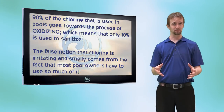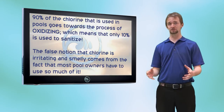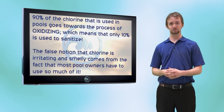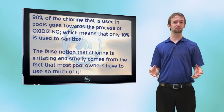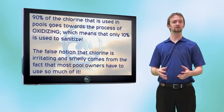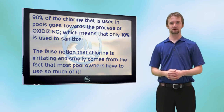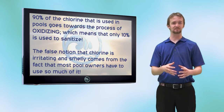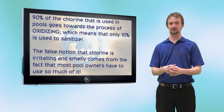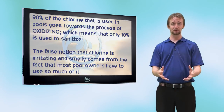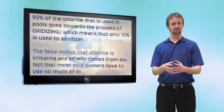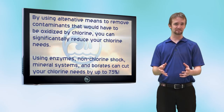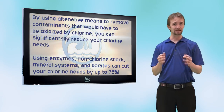Studies have shown that up to 90% of chlorine is used to oxidize, which is why a lot of people have to use so much chlorine in their pools, and why a lot of people with chlorine pools don't enjoy them — because there are alternative methods to oxidizing.